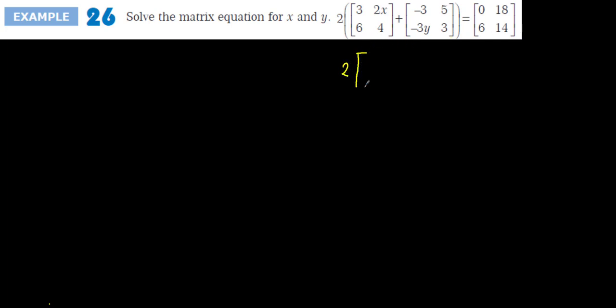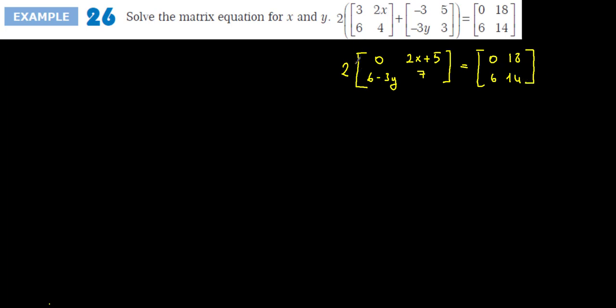This problem asks us to find the values of x and y. There is a parenthesis, so we should first do the operation inside the parenthesis. Inside we get: 3 + (−3) = 0, 2x + 5 stays as 2x + 5 since we cannot add an unknown to an integer, 6 − 3y stays as 6 − 3y, and 4 + 3 = 7. So the matrix inside becomes [0, 2x+5 / 6−3y, 7], and we multiply this entire matrix by 2.